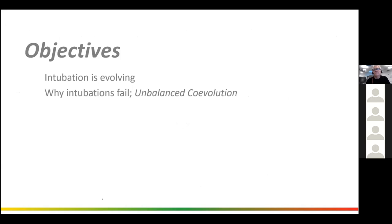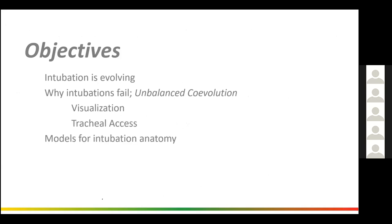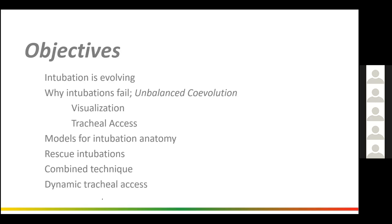The objectives: I want you to understand that intubation is a constantly evolving phenomenon, though evolving extremely slowly, and why intubations fail. In my model, they fail because we have an unbalanced co-evolution of the different components of intubation — visualization components and tracheal access components. We'll go through models for intubation anatomy, how that's changing with video laryngoscopy, rescue intubations, combined technique using a dynamic stylet and fiber optic bronchoscope with a video laryngoscope, and dynamic tracheal access.